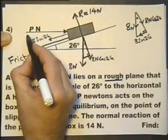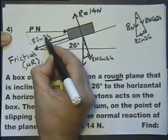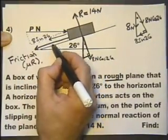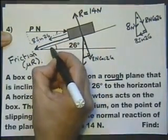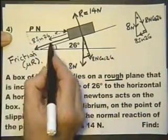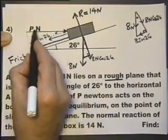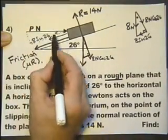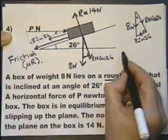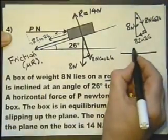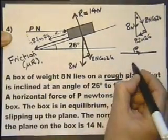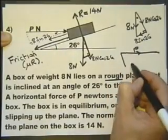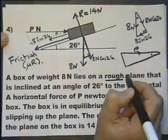Let's consider a right-angled triangle like this. If that's 26 degrees, you can consider this as a corresponding angle. So that's 26 degrees. This is the hypotenuse of the right-angled triangle. Let's draw that over here. So that's representing P Newtons.